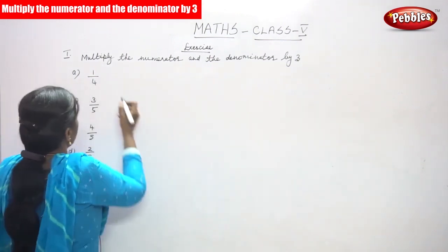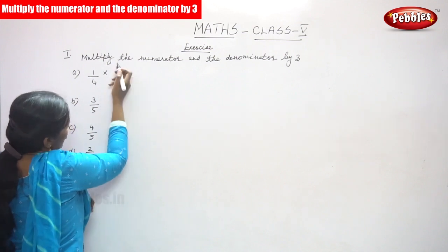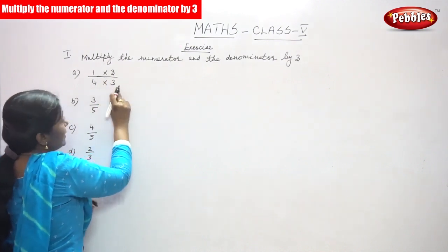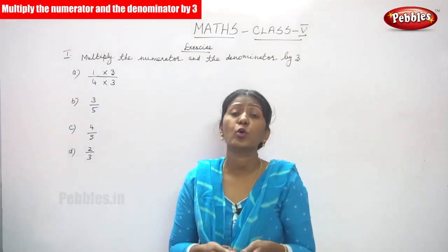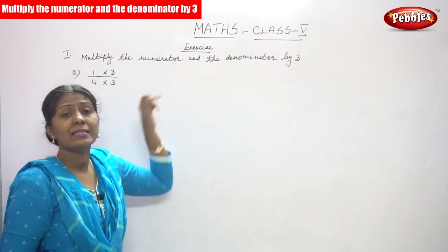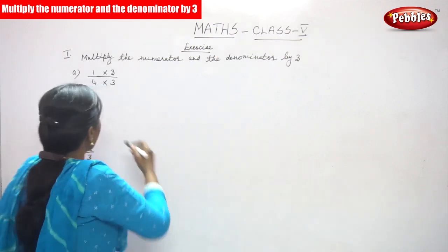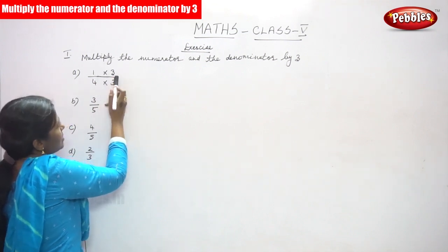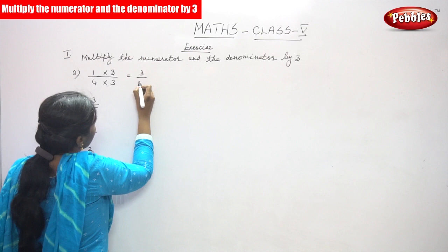Okay, 1 by 4. You have to multiply the numerator and the denominator by 3. So, 1 by 4 into 3 — first I have to multiply, because in the given question they have clearly mentioned multiply the numerator and the denominator by 3. So, 1 into 3 is 3, and 4 into 3, you can get 12.